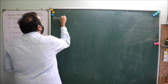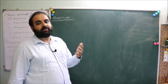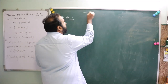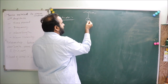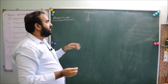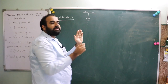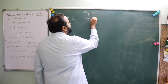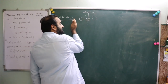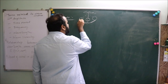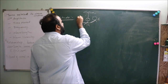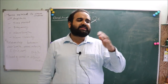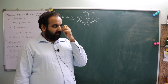Amplitude is the maximum displacement of the particle from the mean position. To understand mean and extreme positions, consider a pendulum. When the pendulum is in equilibrium or rest, that position is called its mean position. When given a displacement, the maximum it reaches on one side and the other side — these are the extreme positions. This maximum displacement is called the amplitude of the wave.